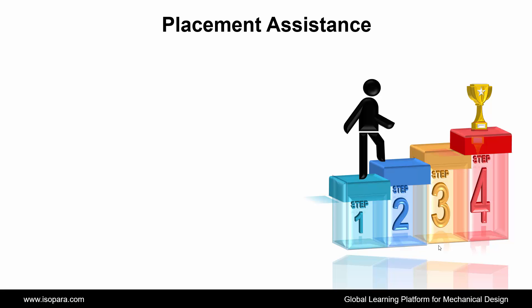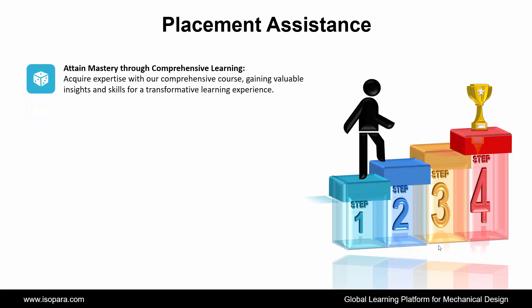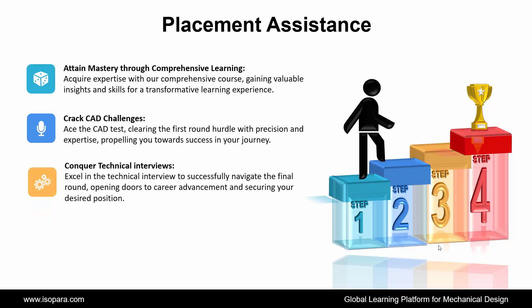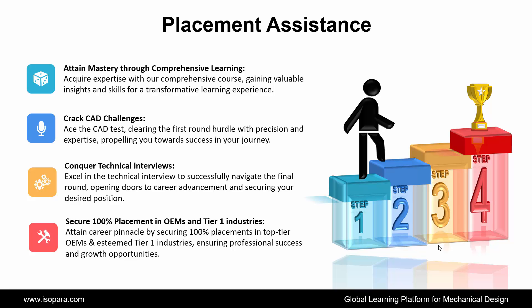Now, we see Placement Assistance. ISOPARA's Placement Assistance works in four steps. First is Attain Mastery Through Comprehensive Learning: Acquire expertise with our comprehensive course, gaining valuable insights and skills for a transformative learning experience. Second is Crack CAT Challenges: Ace the CAT test, clearing the first round hurdle with precision and expertise, propelling you towards success. Third is Conquer Technical Interviews: Excel in the technical interview to successfully navigate the final round, opening doors to career advancement and securing your desired position. And fourth is Secure 100% Placement in OEM and Tier 1 Industries: Attain career pinnacle by securing 100% placements in top-tier OEM and esteemed Tier 1 industries, ensuring professional success and growth opportunities.